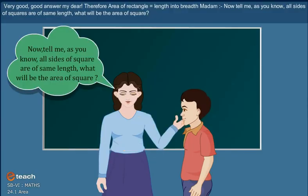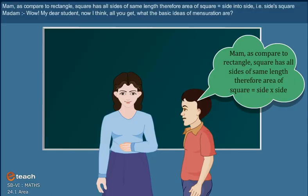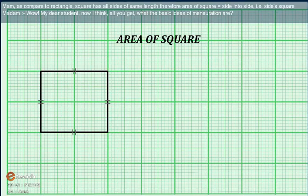Now tell me, as you know, all sides of square are of the same length. What will be the area of square? Ma'am, as compared to rectangle, square has all sides of same length. Therefore, the area of square is equal to side × side. That is, side squared.